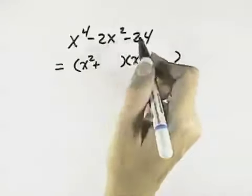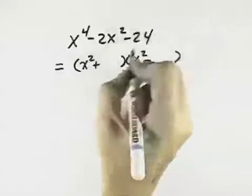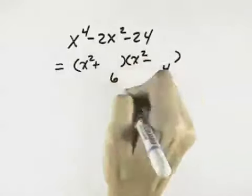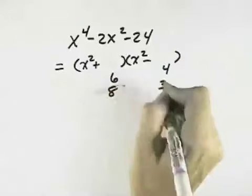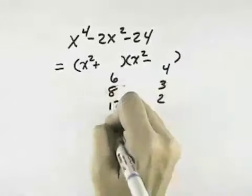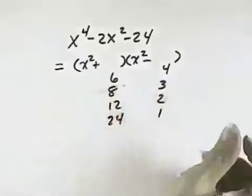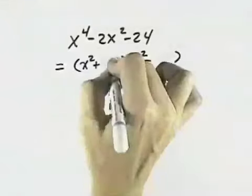And we look for the product, what will give us 24. It might be 6 and 4, or 4 and 6 if we reversed it with the signs. It might be 8 and 3, it might be 12 and 2, it might be 24 and 1. So we're going to try all those different combinations until we find one that works.